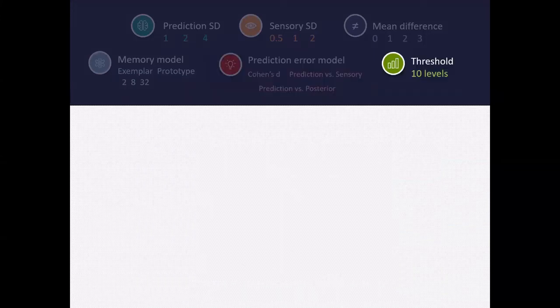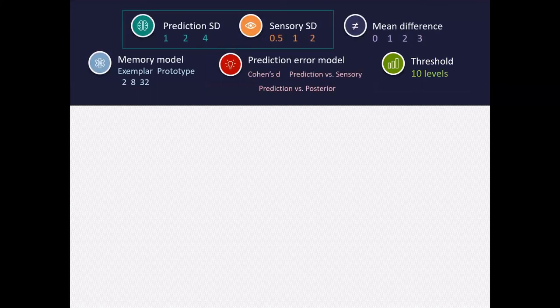And finally, we added surprise threshold. So what we're asking here is, what matters the most when it comes to how often I get surprised? Is it misestimating the precision of my memory or my data?